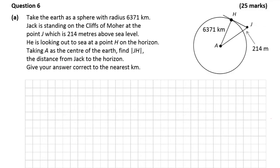Okay so here's our question. We're given this diagram of the earth here on the right and we're to take it as a sphere with a radius 6371 kilometers. We're given that Jack is standing at the Cliffs of Moher at the point J which is 214 meters above sea level and we're told he's looking out to sea at a point H on the horizon. So taking A as the center we've got to find the length JH the distance from Jack to the horizon and give it to the nearest kilometer.